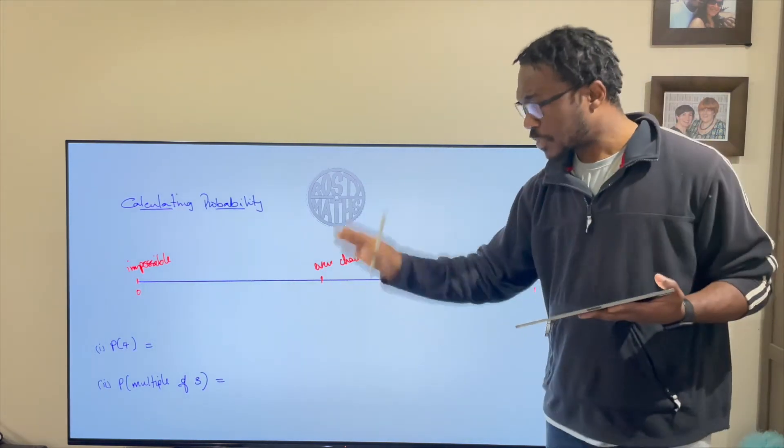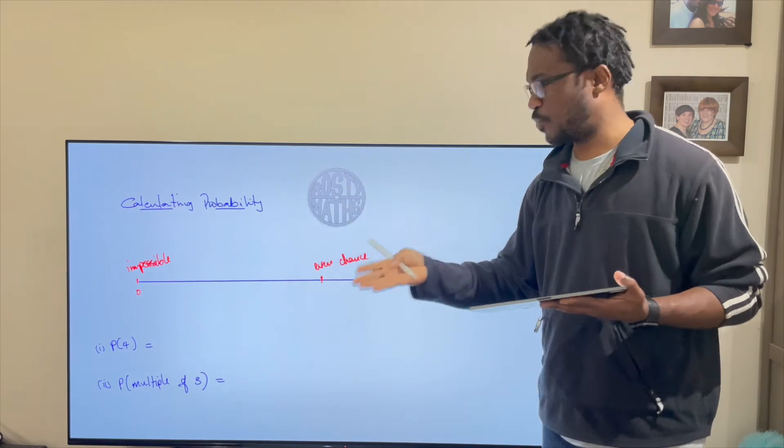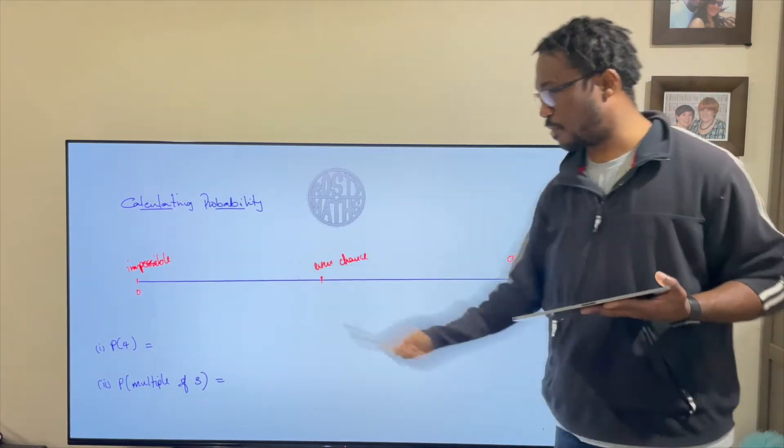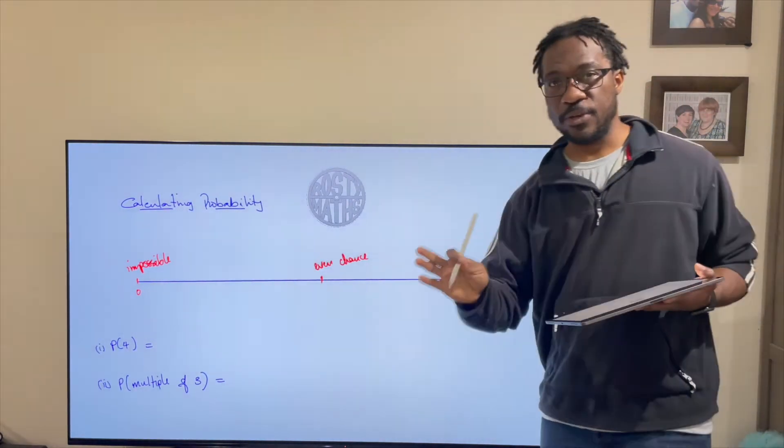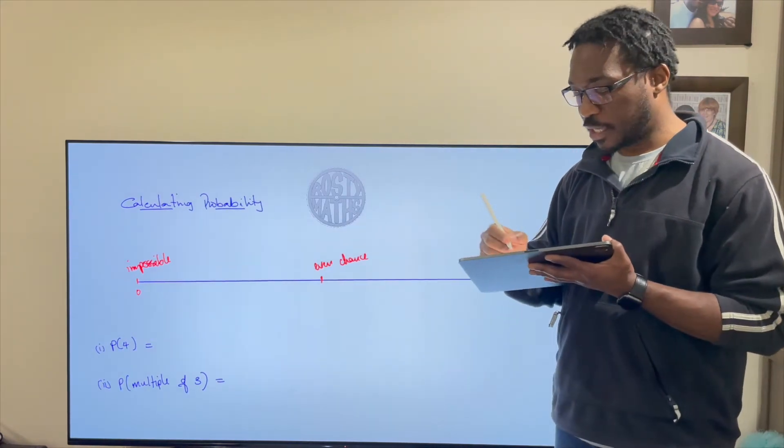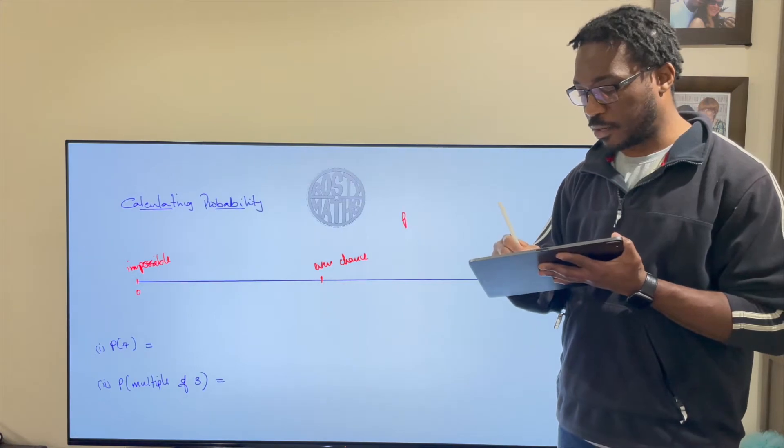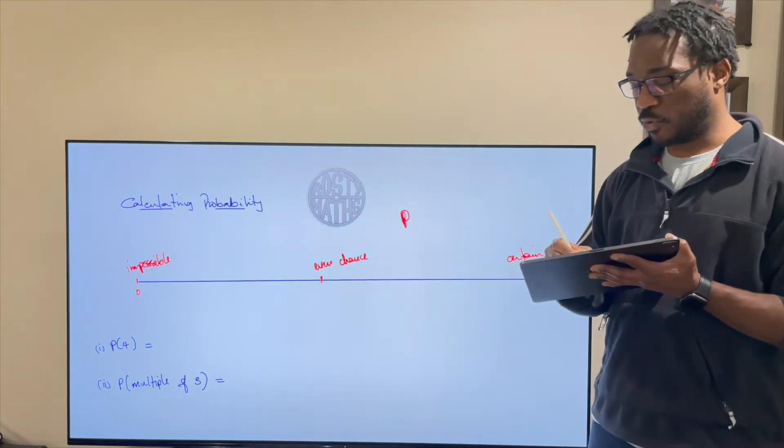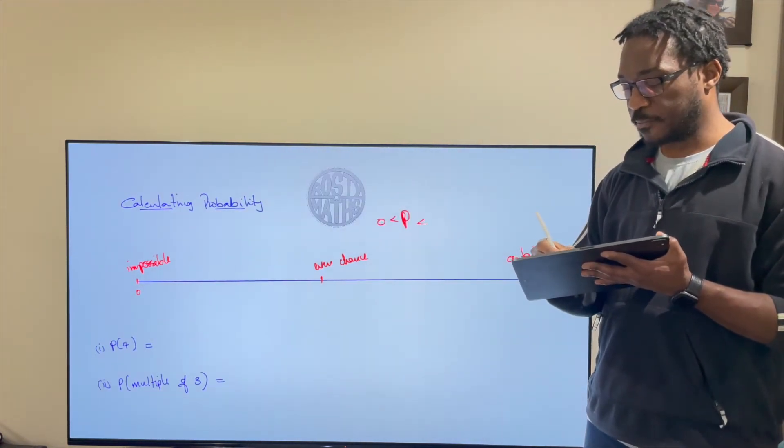So first of all let's see what numbers we're going to get. We've got the first two numbers zero and one. Those two numbers give you your barrier for your probability so anytime you're finding the probability of an event it will always be between zero and one.